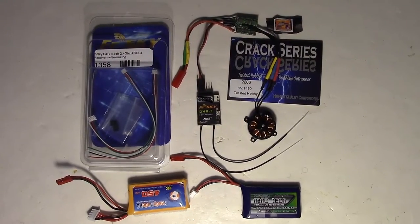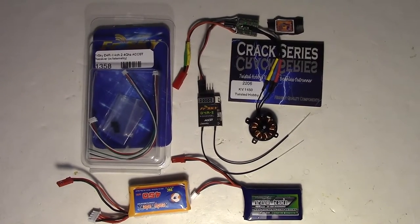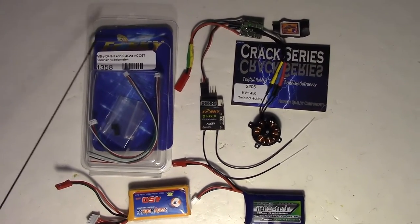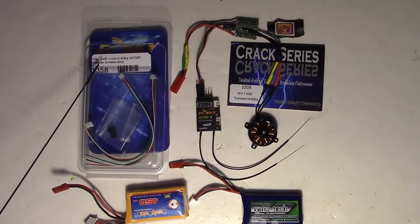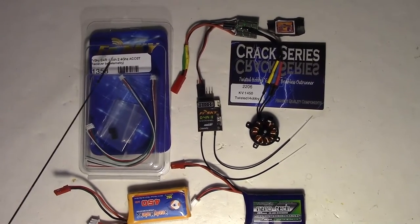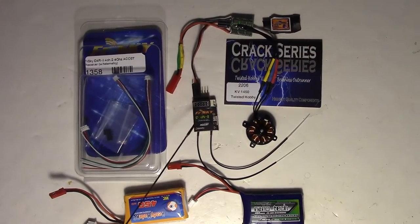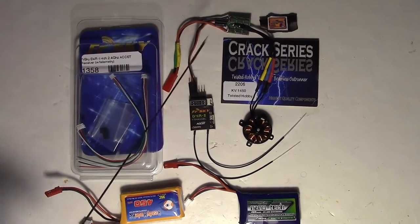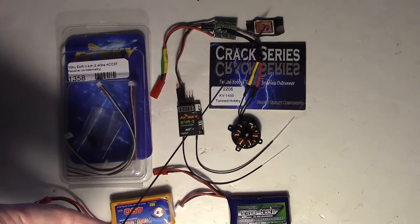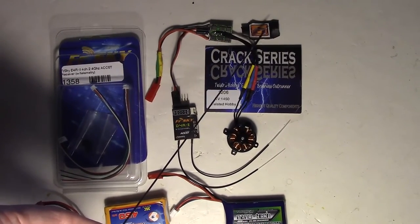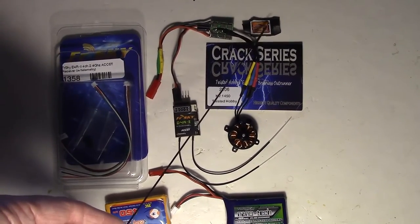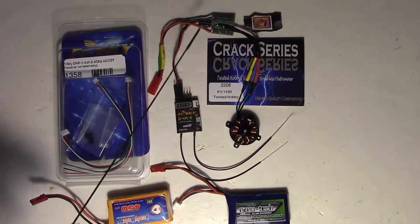I'm going to be using these components for the power system. First, the FrSky D4R2 four-channel receiver right here. For the ESC, I'm using a HobbyKing 8-10 amp ESC, which I've removed the cover of to save weight.